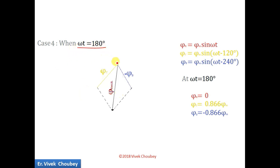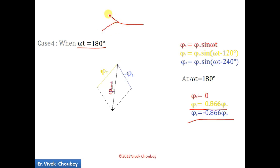At ωt = 180°: φR = 0, so it does not appear. φY = 0.866φm, so φY is positive in its direction. φB = −0.866φm, so φB is in the negative direction. Here φB in the negative direction becomes this vector, and plus φY is in this direction. When we add them vectorially, the resultant flux is in this direction.